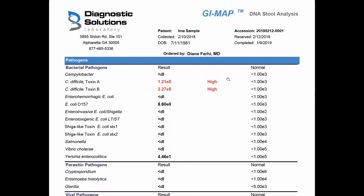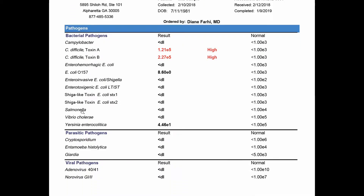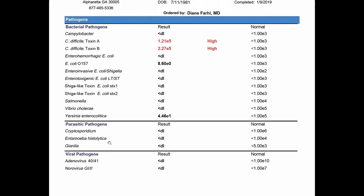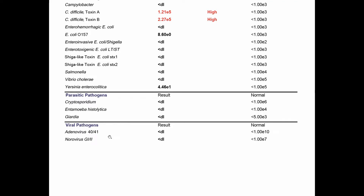So we have all the pathogens that they check for, then they have some parasitic pathogens — single-celled organisms — and then viral pathogens.